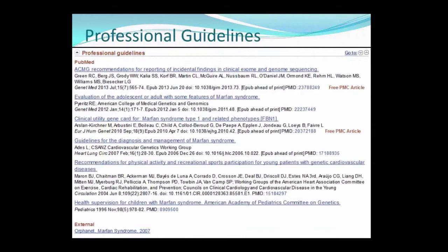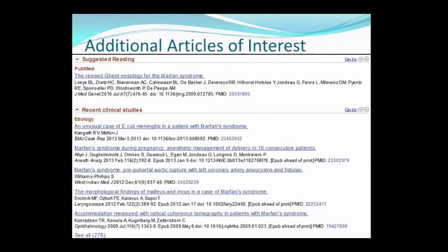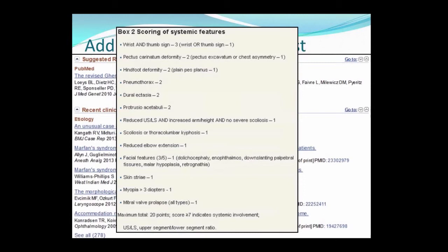Continuing to move down the Marfan syndrome page in MedGen, you'll come to a section on Professional Guidelines. You can take note of the ACMG guideline to evaluating the patient with marfanoid features. Beneath the Professional Guidelines section are Suggested Reading and Recent Clinical Studies. The reference under Suggested Reading is manually curated. So you decide to review this reference, and while reading this paper, you decide to print out the scoring system for the clinic visit.